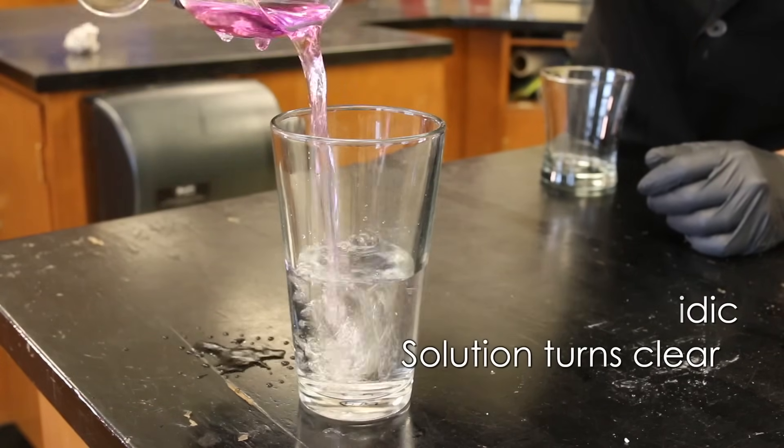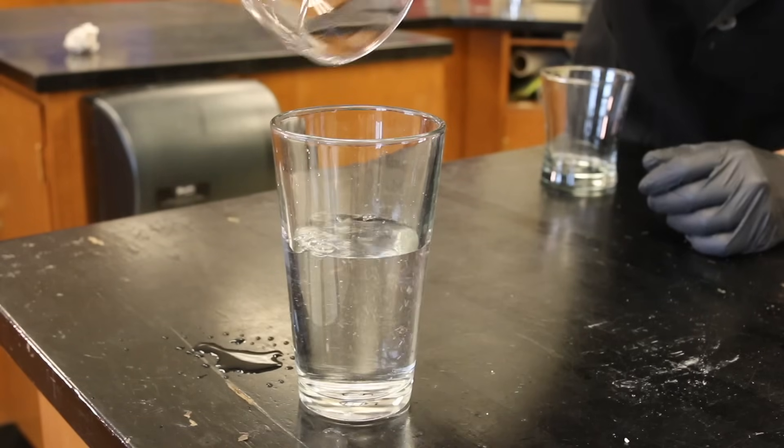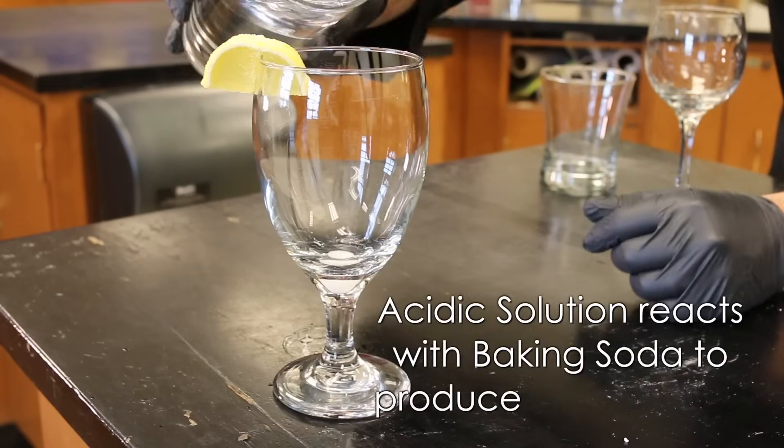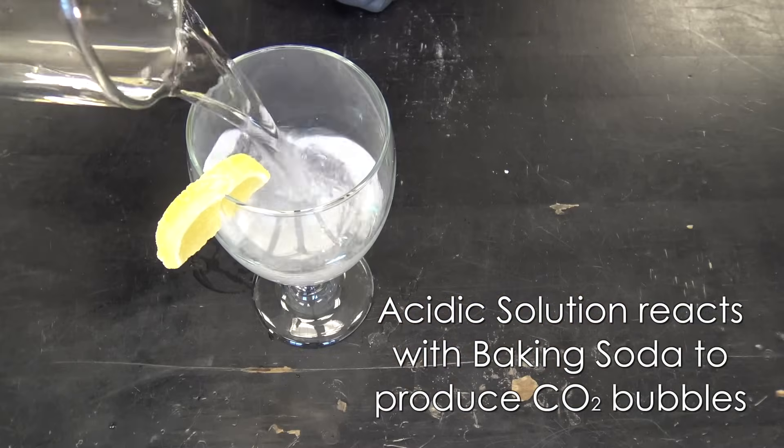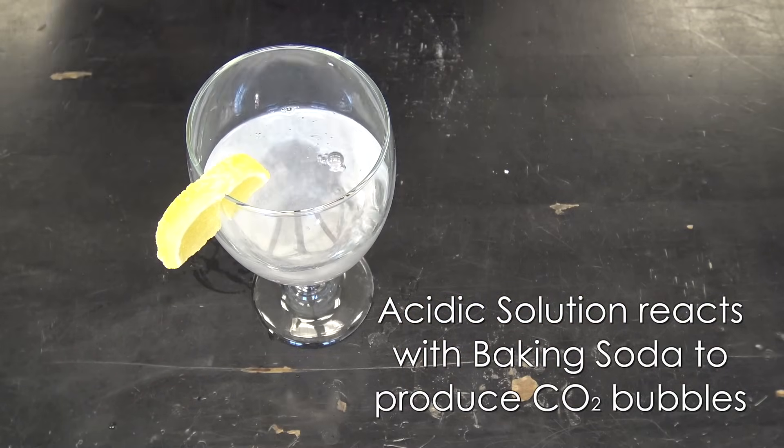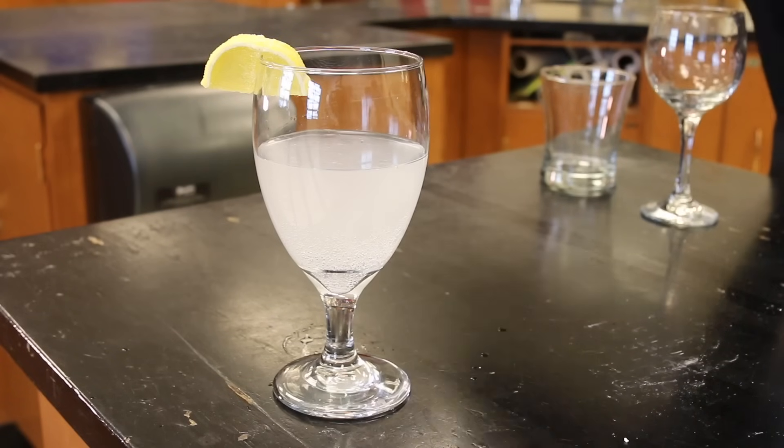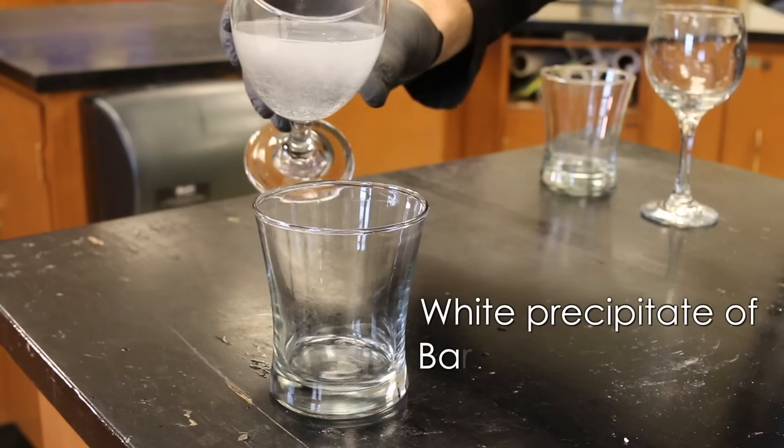This one had sulfuric acid, so we're changing our solution back to acidic, which is why it's turning clear. That's our lemonade. Next up, now I accidentally put the lemon wedge on the wrong one here, but we've got our baking soda in the bottom of this one. When the acidic solution hits it, it releases CO2 gas that makes the bubbles.